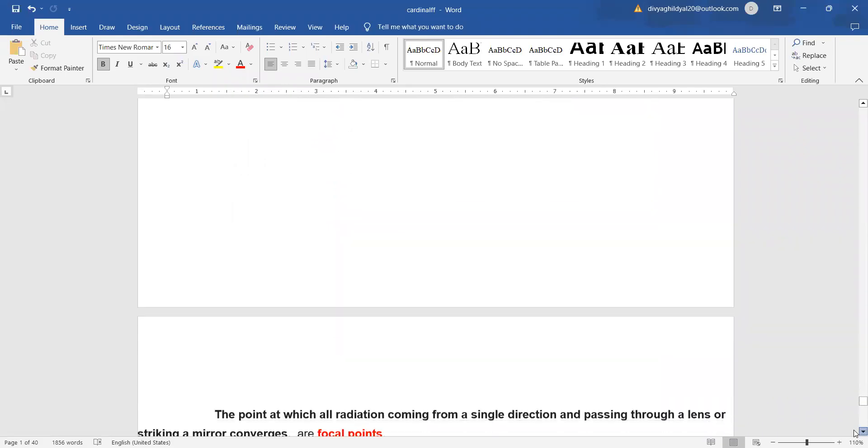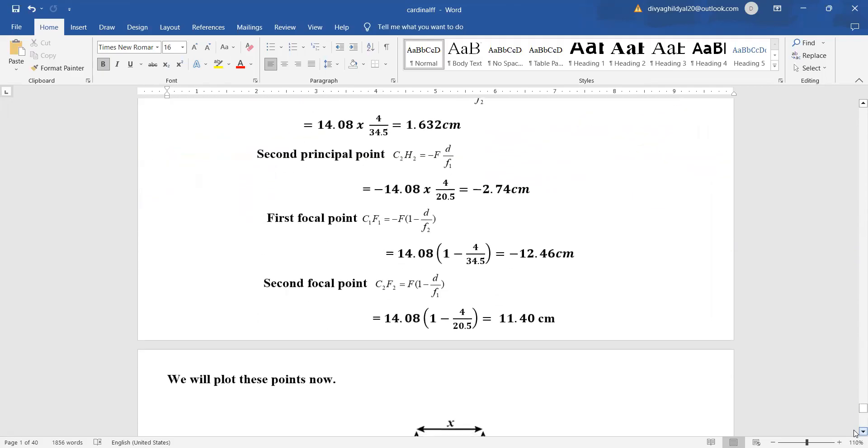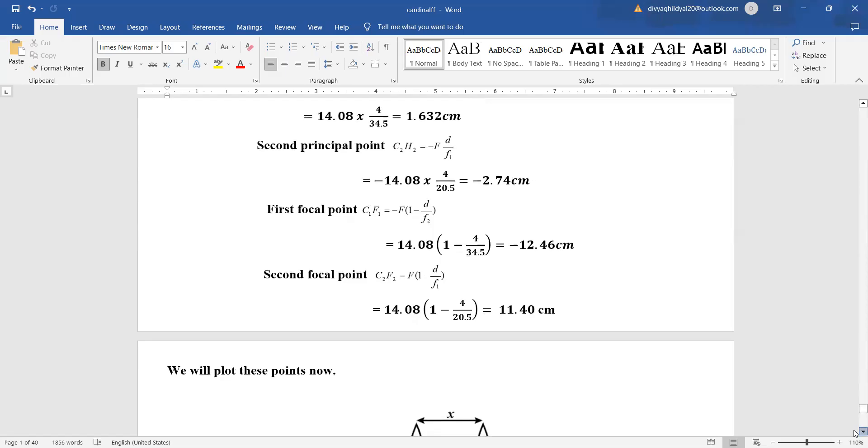Now we will find the two principal points and two focal points. The first principal point equals combined focal length f times distance between the two lenses divided by focal length of the first lens. The first focal point is -F*(1 - d/f2). The second focal point is F*(1 - d/f1).